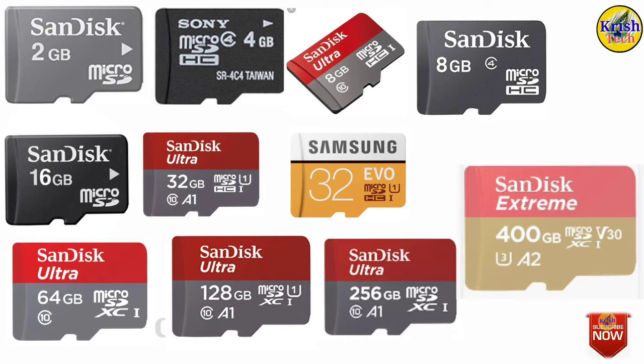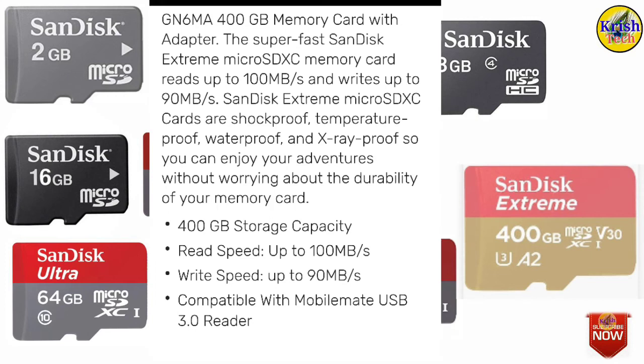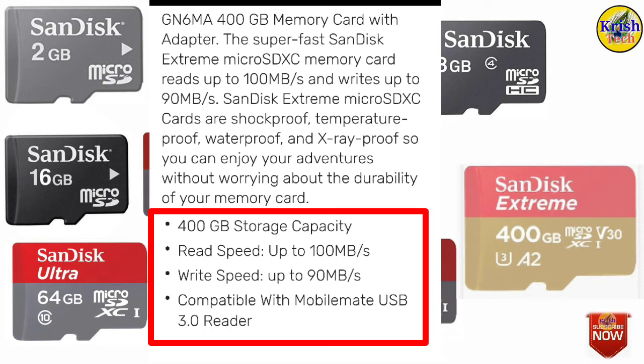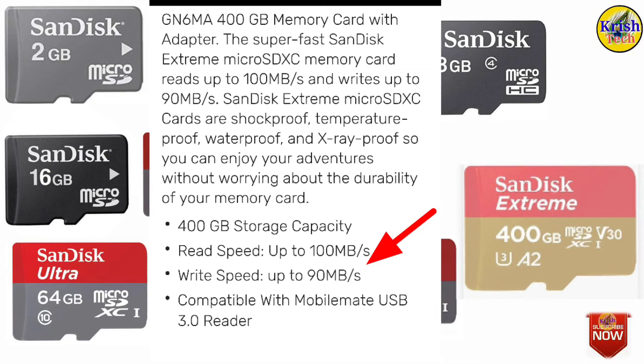For example, you can see the specs at the top of the card. If you have a memory card, check the description. You can see 10 MB/s for some cards. It can be 100 MB/s — for example, 400GB or 800GB capacity, with read speed of 100 MB/s. The speed is very high and the quality is very good.